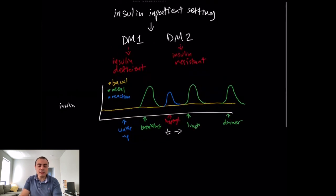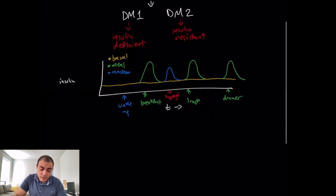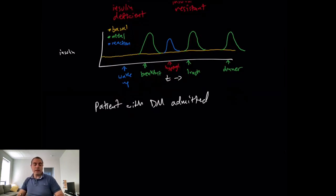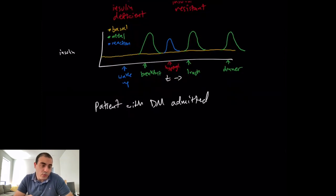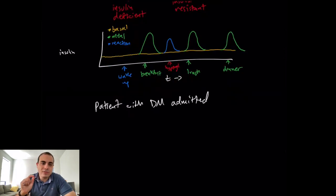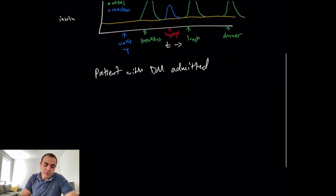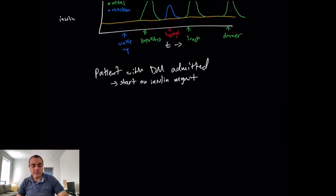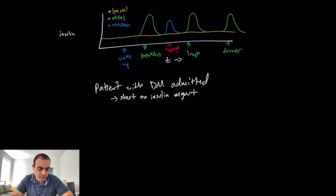If a patient with diabetes is admitted to the hospital, you can continue their home medications — for example, if they're a type 2 diabetic on metformin at home. However, metformin is often held due to a small theoretical risk of lactic acidosis in the setting of sepsis. For all intents and purposes, when admitted you're going to switch them to insulin management for their diabetes.